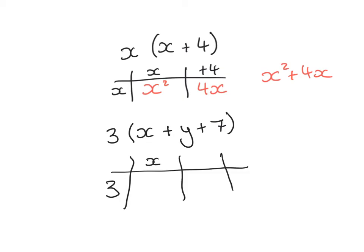So 3, X, Y and 7. 3 times X is 3X. 3 times Y is 3Y. And then 3 times 7 is 21. Sorry that should be a positive 7, which makes it a positive 21. So the answer for this section is 3X plus 3Y plus 21.